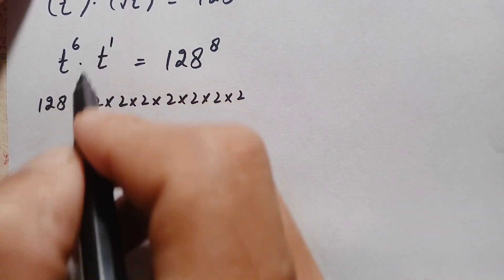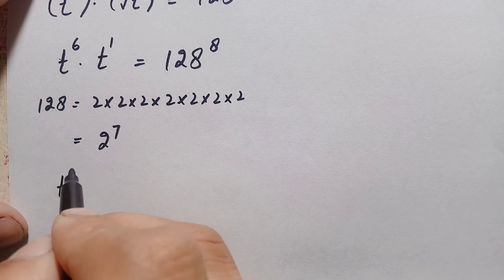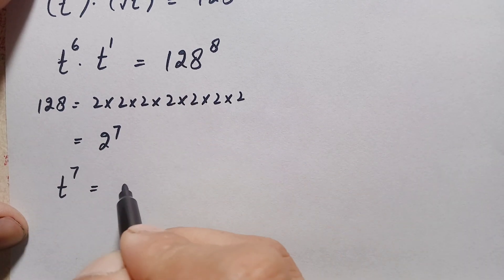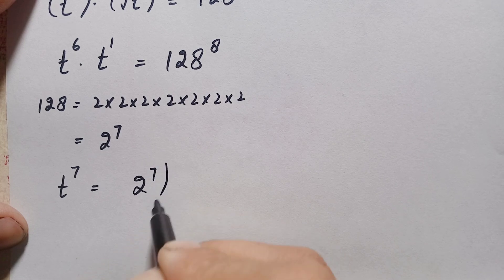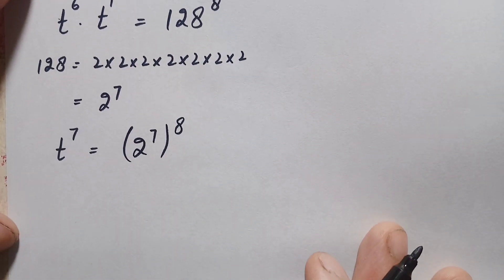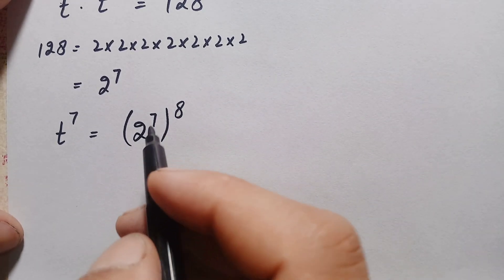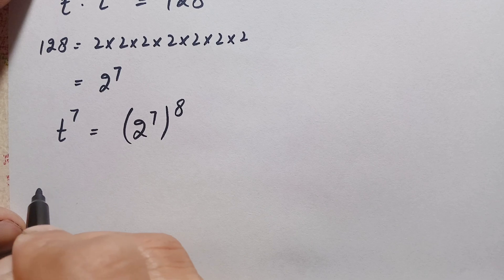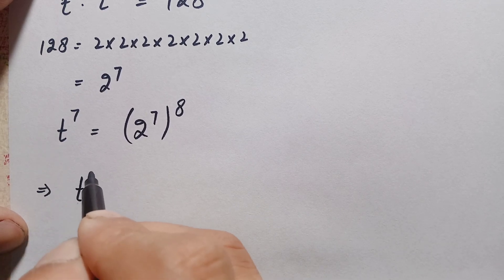Replacing 128 with 2 to the power 7: since the base on the left is t, we add the powers 6 plus 1 to get t raised to power 7. On the right side we have 2 raised to power 7, raised to power 8, and applying the power-to-power rule this becomes 2 raised to power 7 times 8, which is t raised to power 7 equal to 2 raised to power 56.